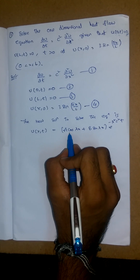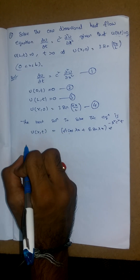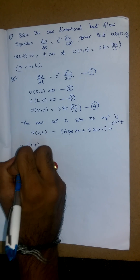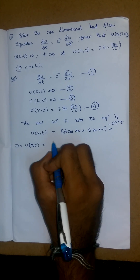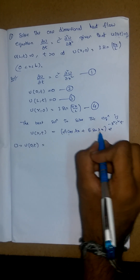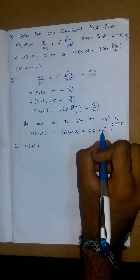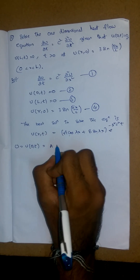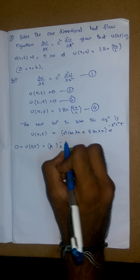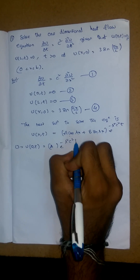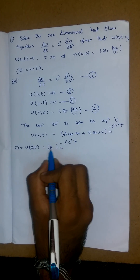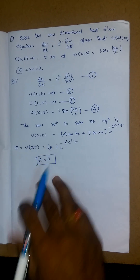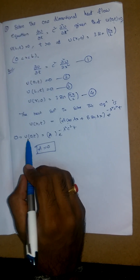Substituting u(0,t) = 0: cos(0) = 1 and sin(0) = 0, so we get A · e^(−λ²c²t) = 0. For this condition to be zero, A must equal 0.